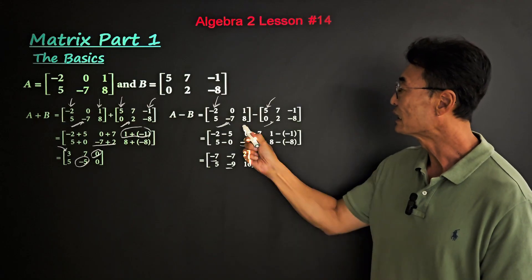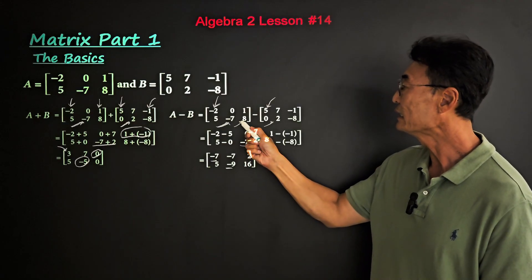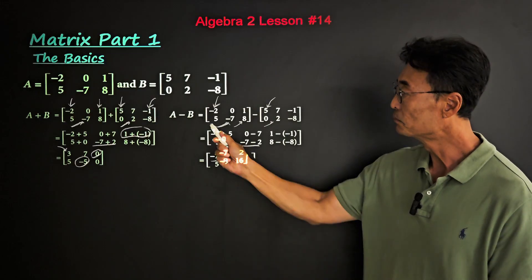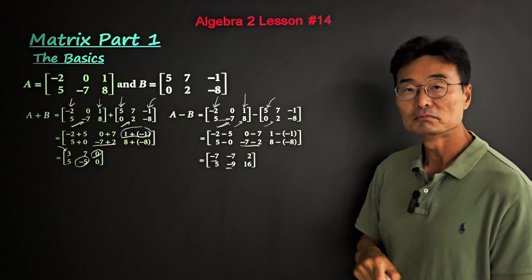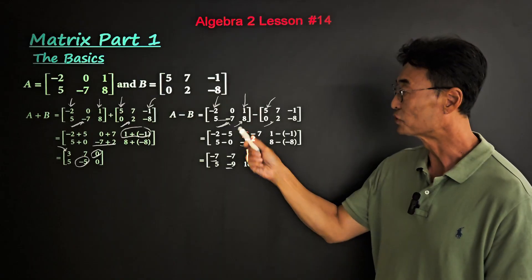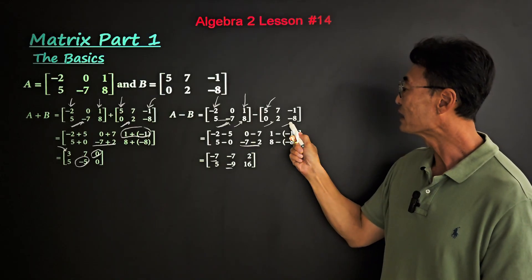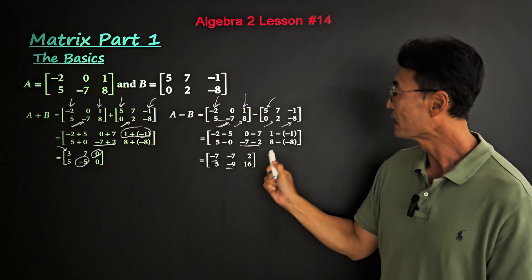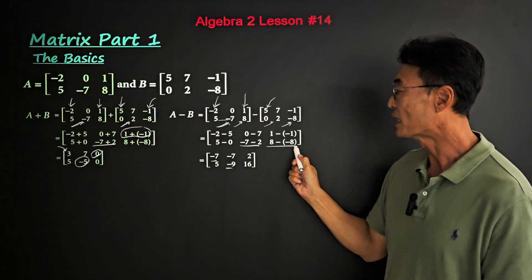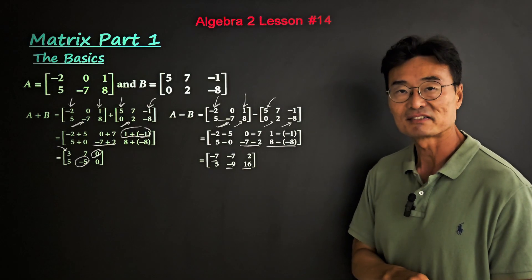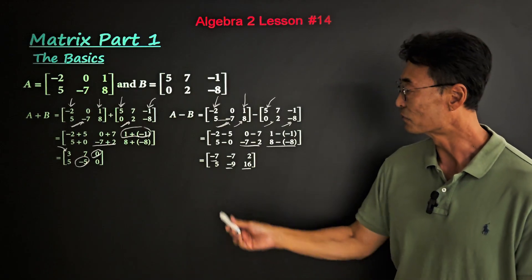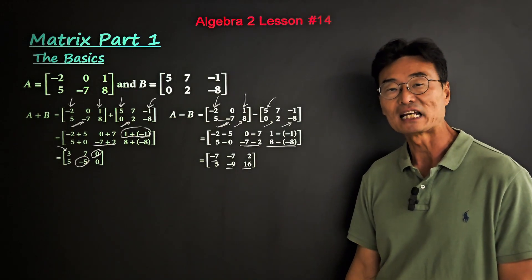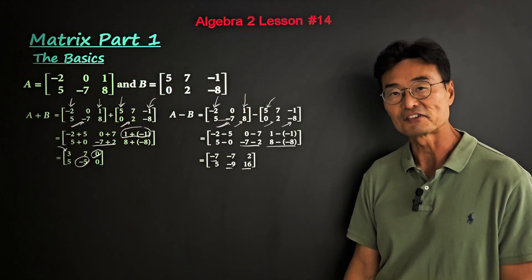Here's one more. We could take 8, which is the second row, third column from matrix A, and we could take negative 8, which is in the same position, and subtract, where we end up with 16. Therefore, this is going to be the difference between matrices A and B.